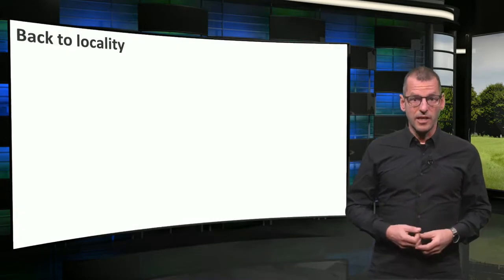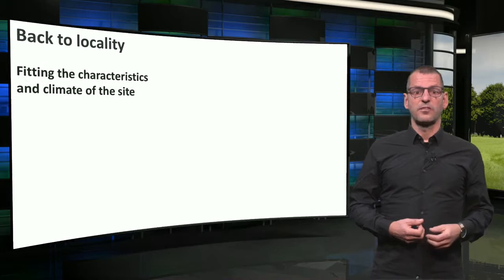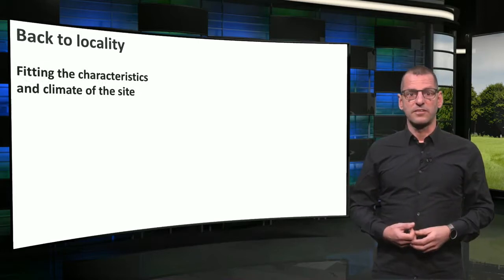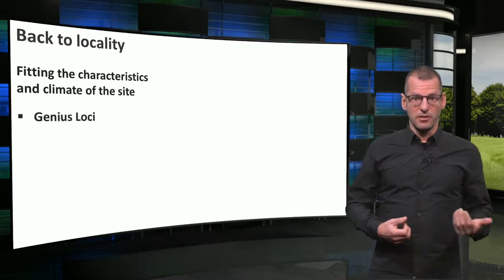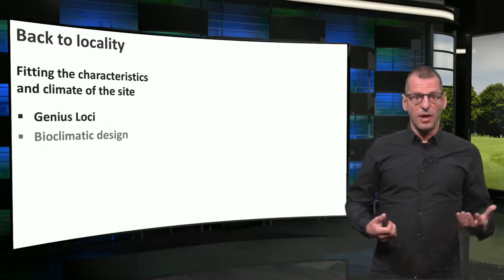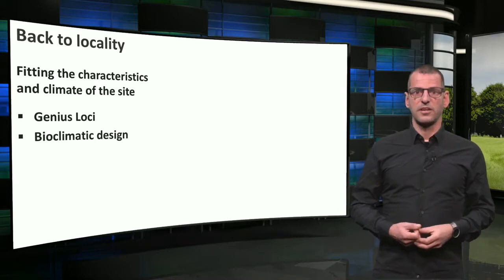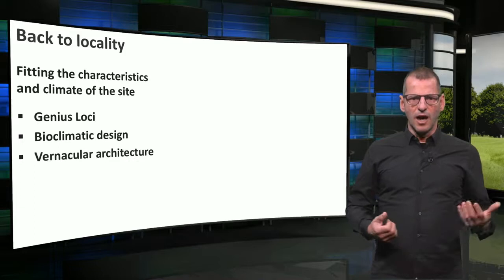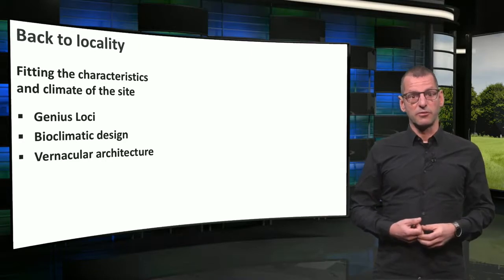In that sense, locality means that a building fits the characteristics and the climate of the site. Other terms that reflect this principle are genius loci, the spirit of the place; bioclimatic design, buildings that are adapted to the local climate; and vernacular architecture, architecture that has historically evolved due to local availability and lack of resources, when people had to solve things differently.